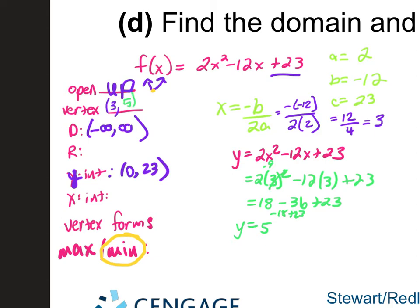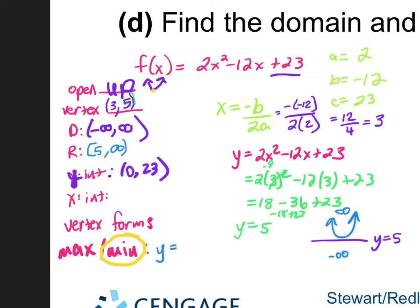Now we can answer everything else. The range is based on the y part of the vertex, which is y = 5. This is a positive parabola, so it opens upward. The parabola exists from 5 to infinity, so the range is [5, ∞). We always have a parenthesis on infinity. Your minimum is at y = 5.